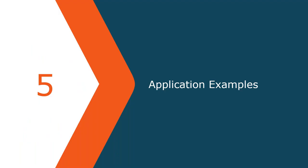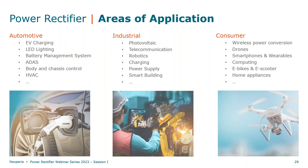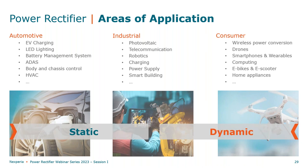So far we have been introduced to the working principles of diodes and how these are specified in our datasheets. Now I would like to look at the decision process on how to select the right diode technology for your application. Power rectifiers are represented in almost every application you encounter in daily life. In some of these applications they play an important role, in others a more subtle one. But ultimately it comes down to the basic question: is the diode used in a static application or is it used in a dynamic application?